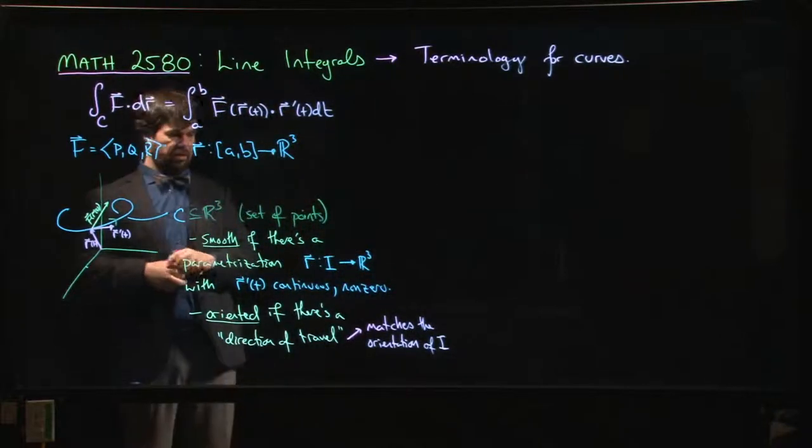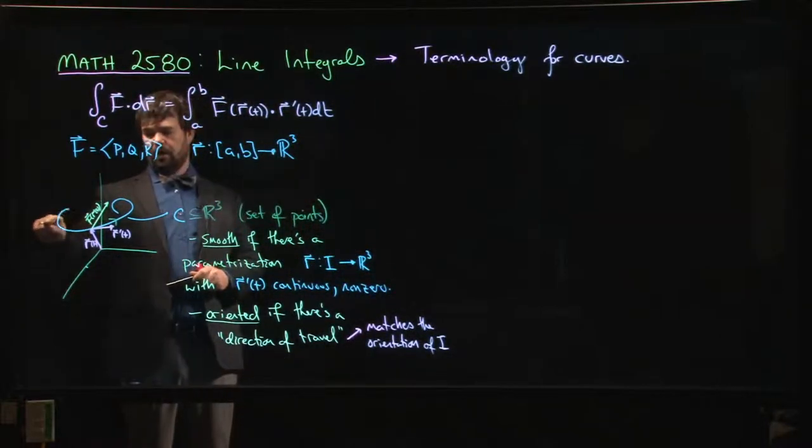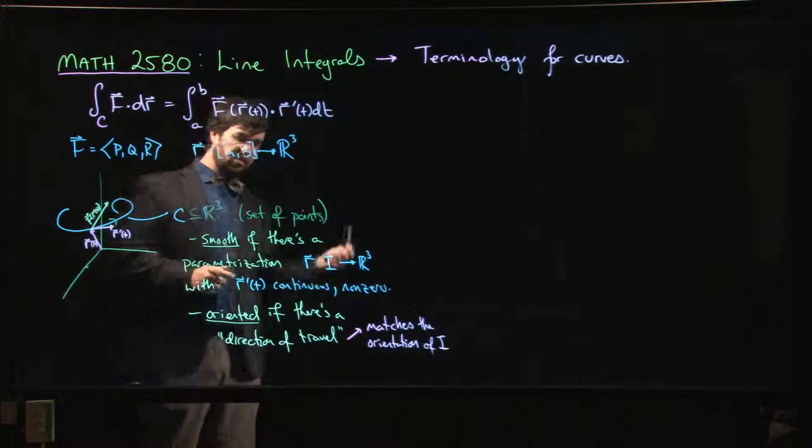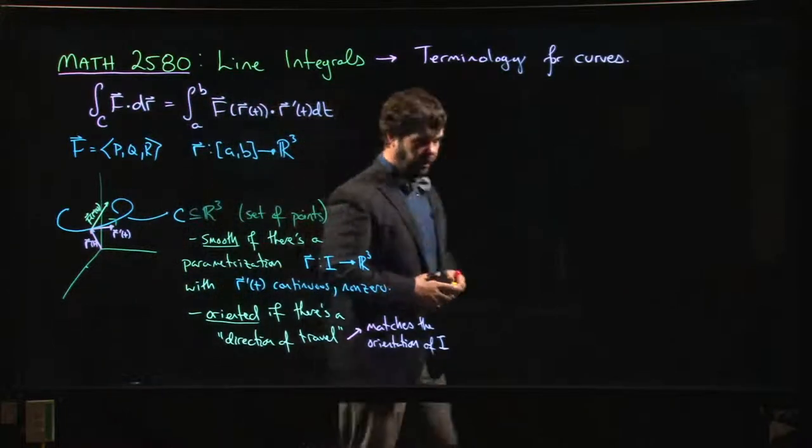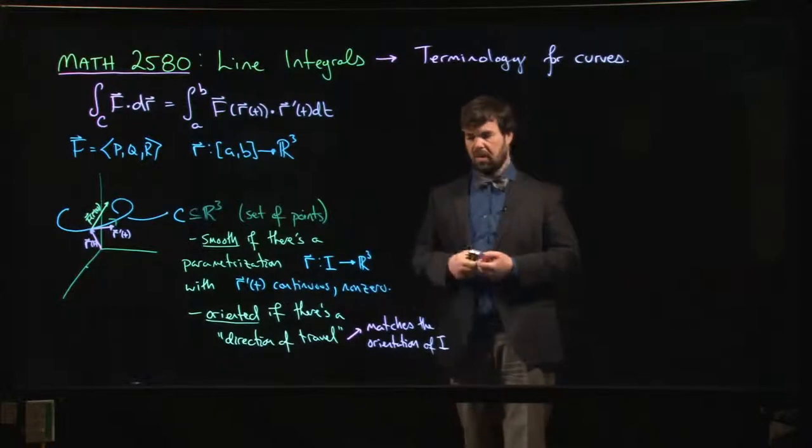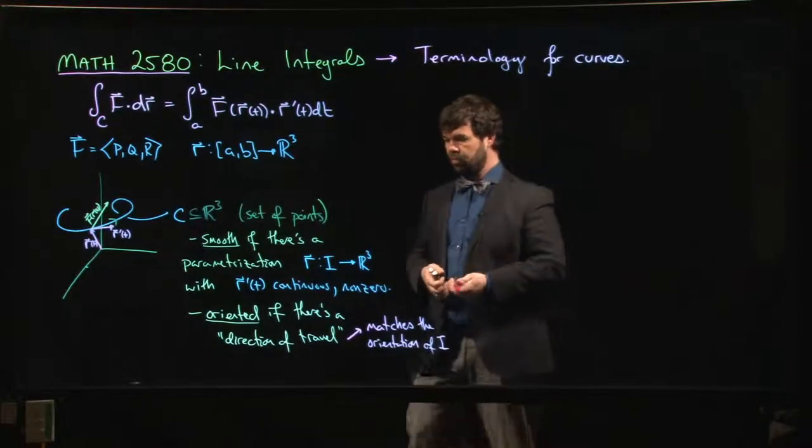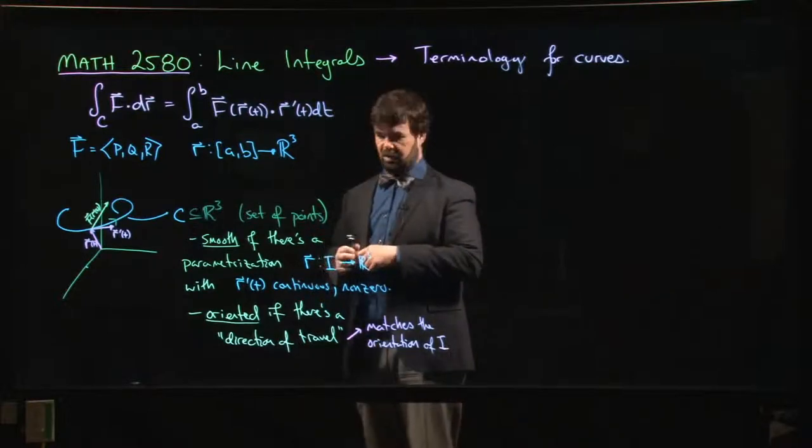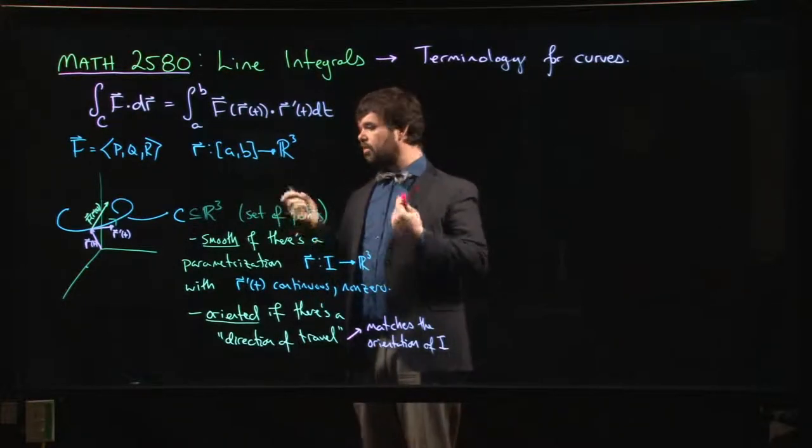So if we are parameterizing, we want to make sure that we start at one end of the interval and as we move to the other end of the interval we are tracing out the curve in the correct direction. It is possible of course that you might write down a parametrization that goes the wrong way—it can happen—but usually we will try to make sure that our parametrization matches the chosen orientation.